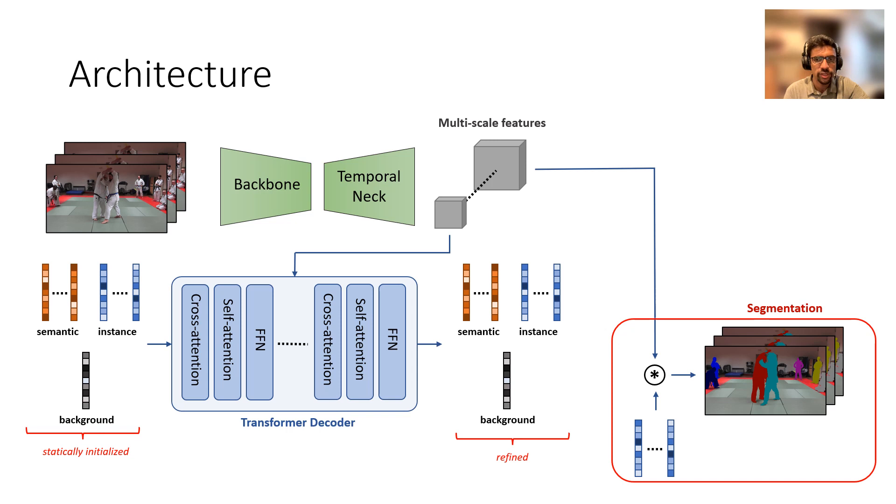To segment the instances, we simply compute the dot product between the instance queries and the highest resolution video feature map. To assign category labels to the instances, we compute classification scores by taking the dot product of the instance queries with the semantic and background queries.